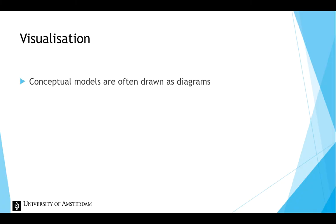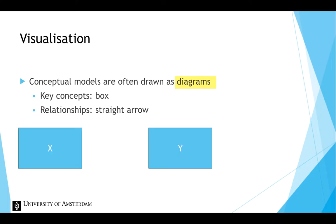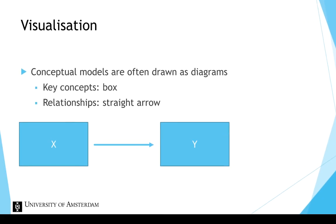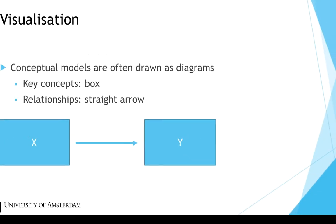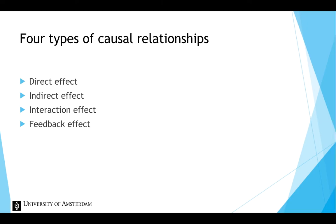Conceptual models are often drawn as diagrams. The key concepts are represented by a short label and put in a box, and the causal relationships are indicated by straight arrows pointing from the independent variable to the dependent variable. In a conceptual model, four types of causal relationships can be distinguished, and we will give examples of each with a diagram.